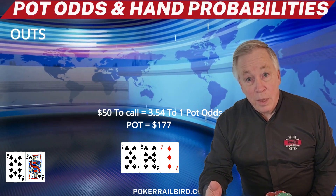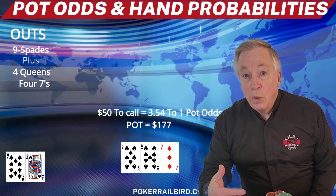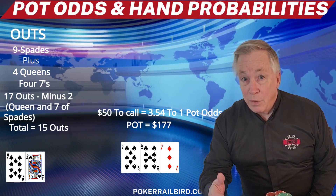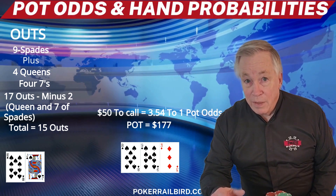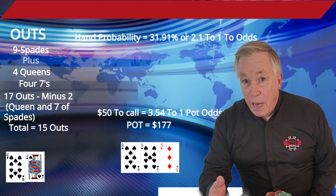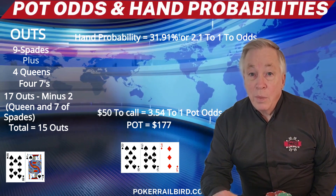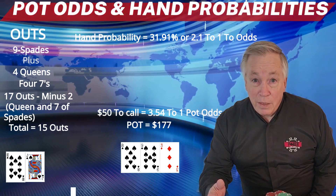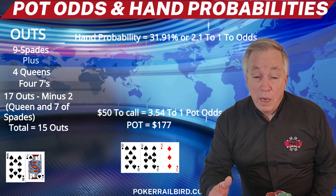Do you call? Let's take a look at our outs and probabilities. There are 9 spades remaining in the deck, which gives us a jack-high flush draw. Four queens and 4 sevens for a straight draw, and of course we also have the open-ended straight flush draw. This gives us 17 outs — 9 spades, 4 queens, and 4 sevens — but one of those sevens and one of those queens is also a spade, so we have to deduct 2, giving us 15 outs. For the turn, our hand probability is 31.91%. 47 unseen cards divided by our 15 outs equals 31.91%, or odds of 2.1 to 1. If we miss the turn, then the river is marginally better at 32.6%, but the odds remain about 2.1 to 1. The mathematically correct play is to call, because the odds of making your hand — 2.1 to 1 — is better than the pot odds of 3.54 to 1.